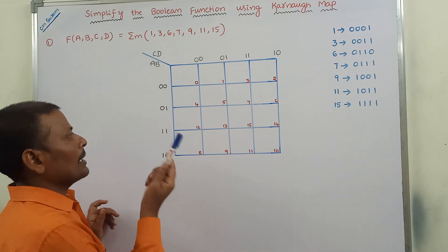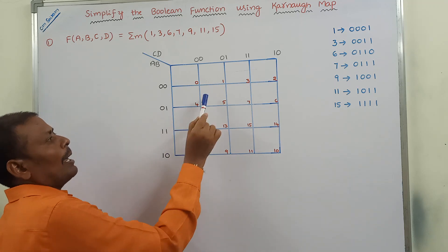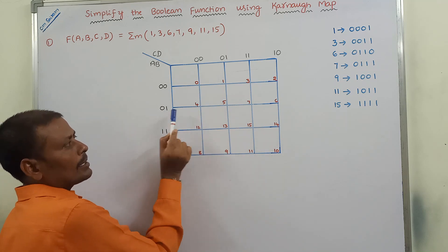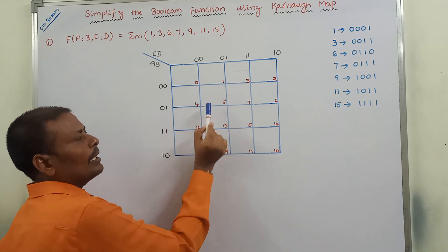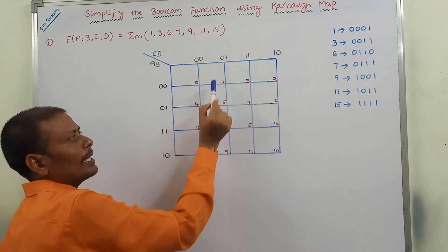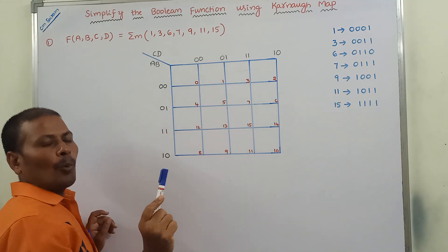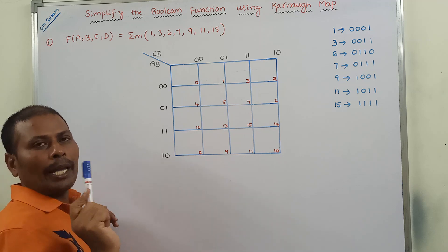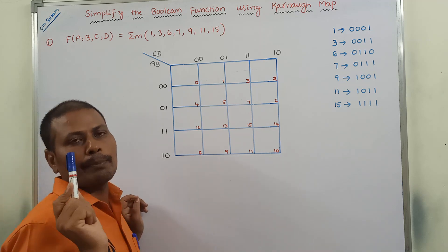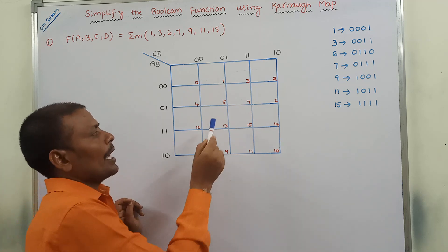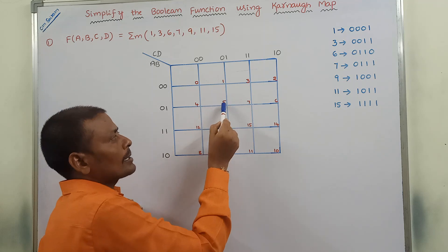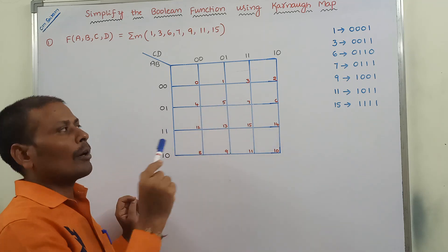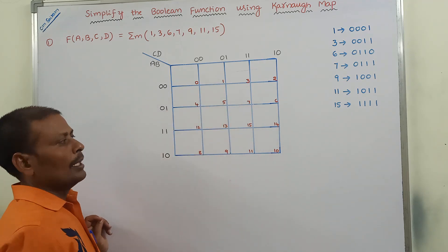For example, I am taking this cell. Row-wise 01, column-wise 01 — so the 4-bit binary is 0101. The equivalent decimal number is 5. We have to write cell number 5 in the corner of that cell.